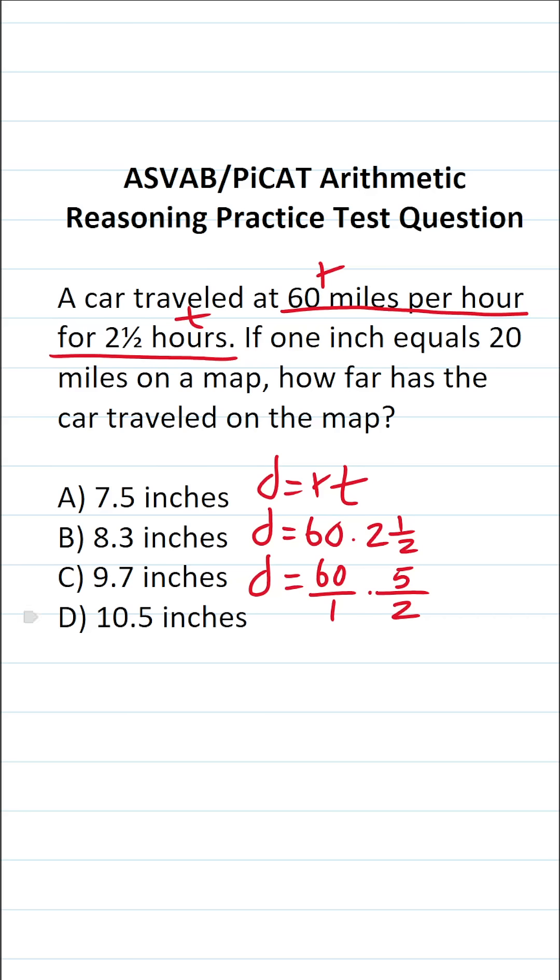Now we're multiplying two fractions, and the easiest way to do this is to cross reduce as much as possible. More specifically, I can say two goes into two one time, two goes into 60 thirty times. This is 30 over one, which is 30, times five over one, which is five. 30 times five is 150.